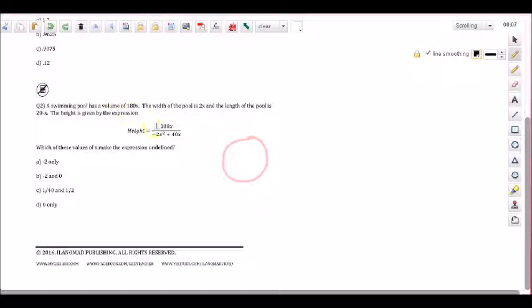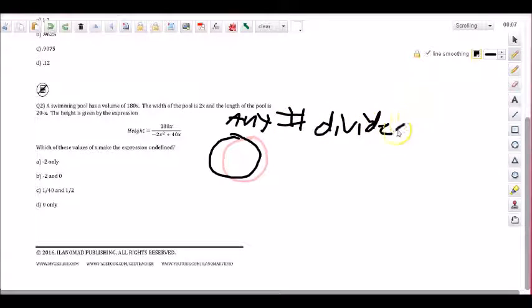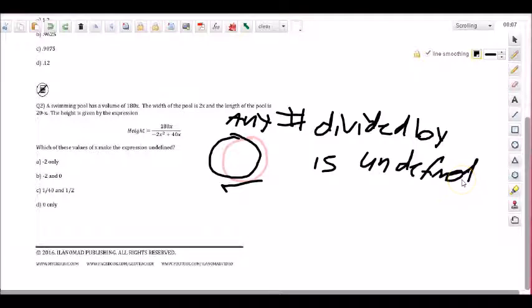It's a very simple thing but you have to know it. So any number divided by zero is undefined.